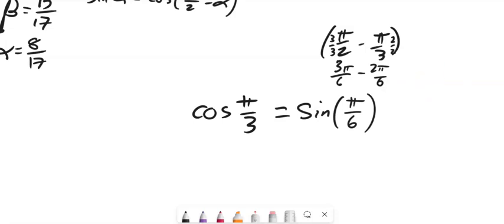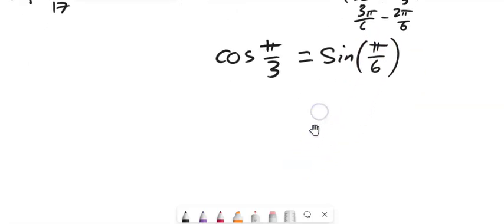We can go back and forth between those representations. If we know cosine of something, we know sine of something else is equal to it, or it might be the same thing if they're both 45.